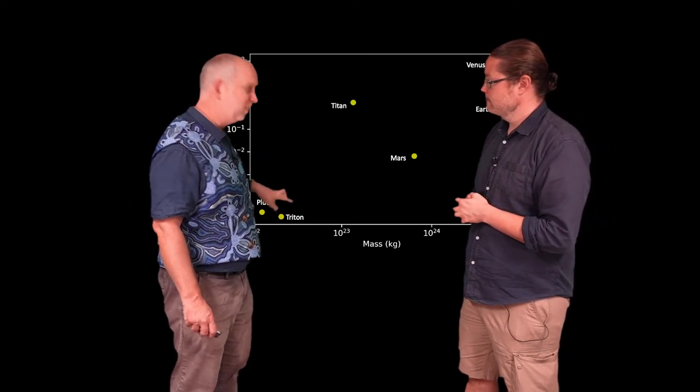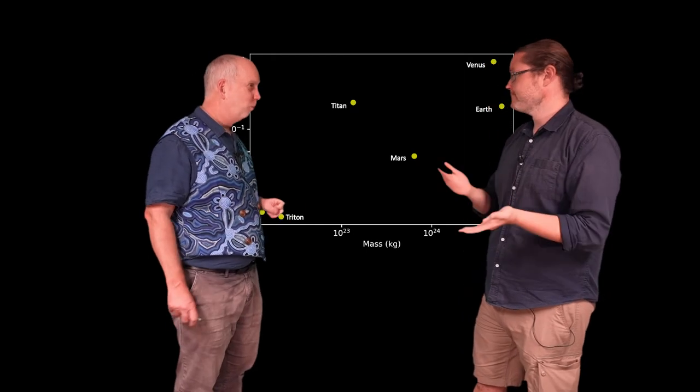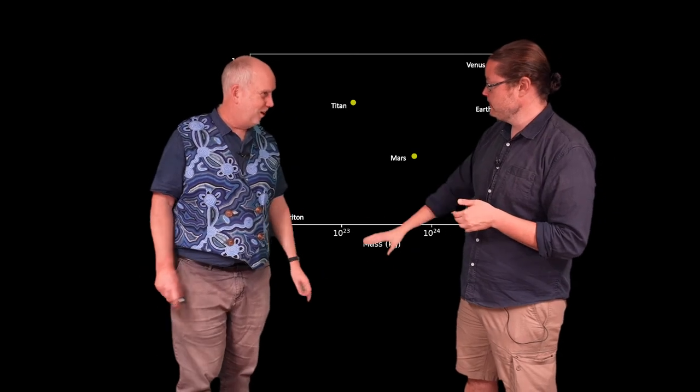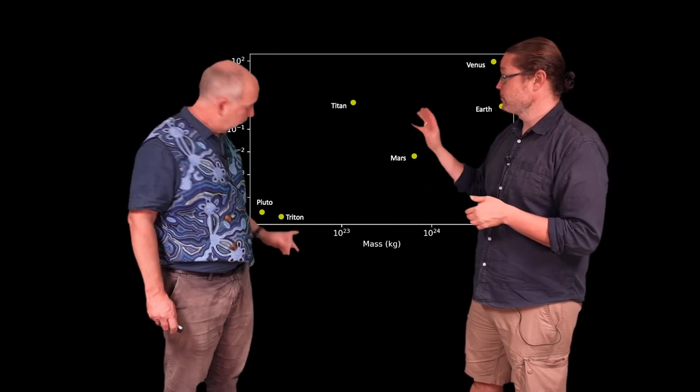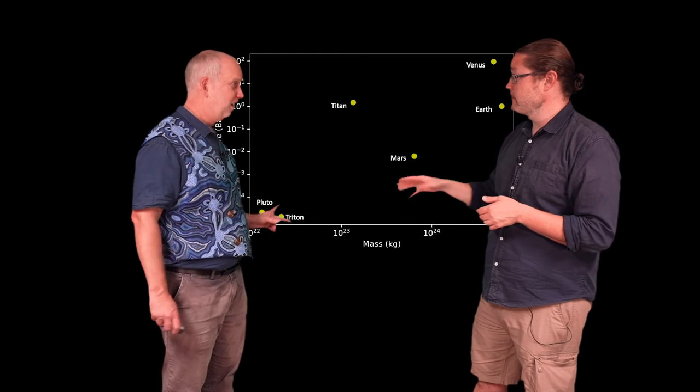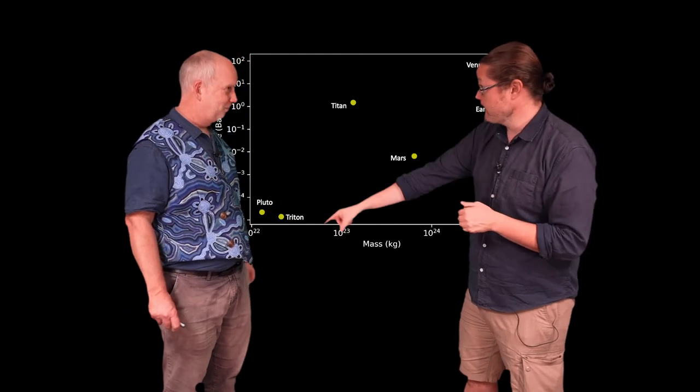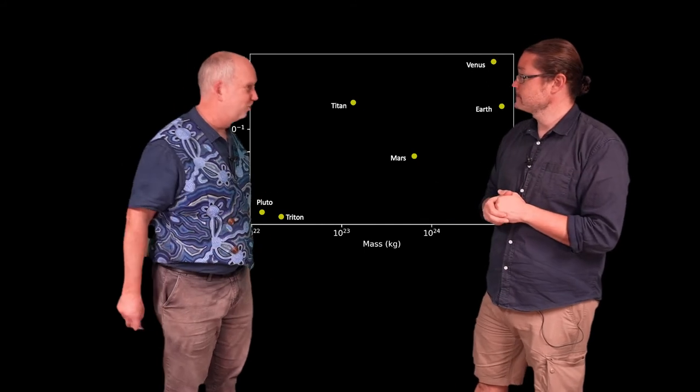And then basically these are the only six rocky objects in our solar system that have atmospheres at all. Everything else is way off the bottom of this. So Pluto and the moon are tiny? Pluto and Triton have a bit of atmosphere. The moon on the scale would be way down there. Same with Mercury, same with all the asteroids.